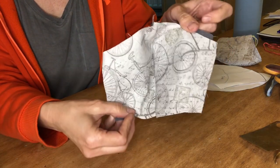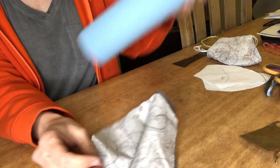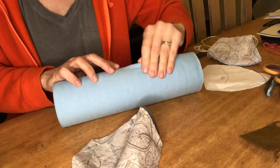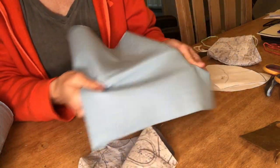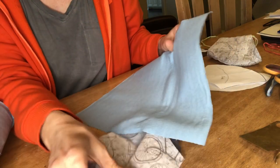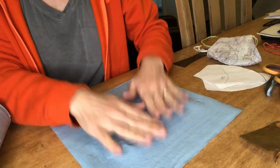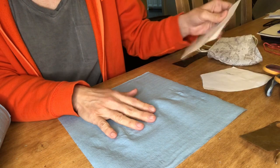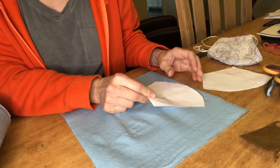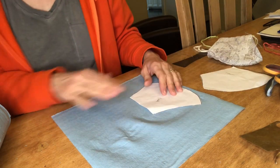However, my mask is going to be three layers because in between those two layers I'm using this shop towel, which is a super durable washable towel, and that's going to be a third layer. So I'll cut that out with the same pattern pieces.